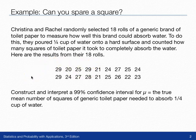What we want to do is construct and interpret a 99% confidence interval for the true mean number of squares of generic toilet paper needed to absorb one-fourth of a cup of water.